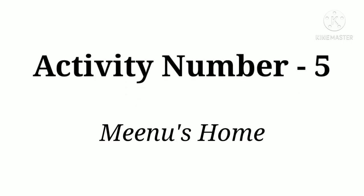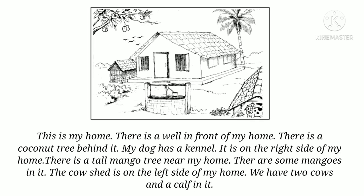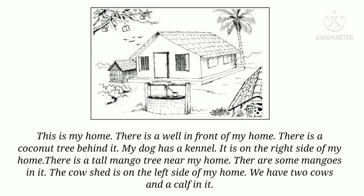Activity number 5: Meanyu's Home. Look at the picture. This is Meanyu's home. The teacher asked her to write about her home, and Meanyu wrote: 'This is my home. There is a well in front of my home. There is a coconut tree behind it. My dog has a kennel — it is on the right side of my home. There is a tall mango tree near my home and there are some mangoes in it. The cow shed is on the left side of my home. We have two cows and a calf in it.'